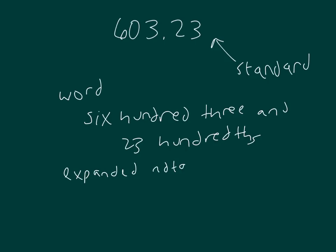So we write out those values. So that would be 6 times 100, plus 3 times 1, plus 2 times a tenth, plus 3 times a hundredth. And so we should be able to write these out in different ways to understand how place value can help us write out these numbers.